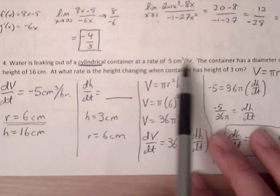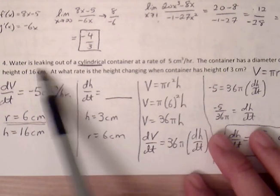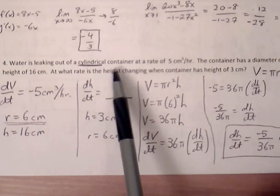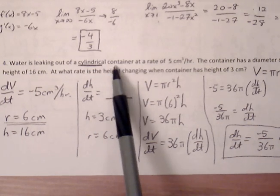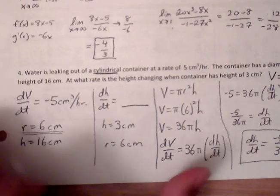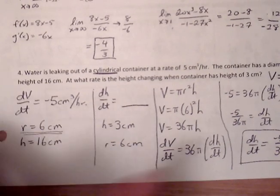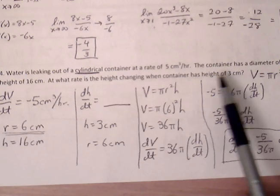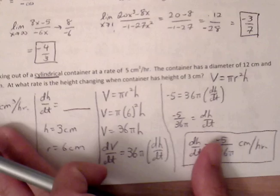And also we know that water is leaking out at a rate of 5 cubic centimeters per hour. Cubic centimeters is a measurement for volume and we have that per hour so we know that's a rate. And water is leaking out so we know that that container is losing water so the volume is decreasing. So we want a negative to represent that, so dV/dt is negative 5 cubic centimeters per hour.